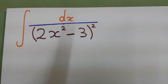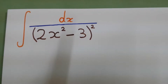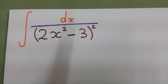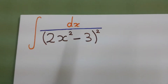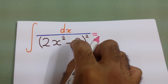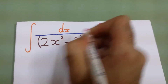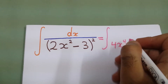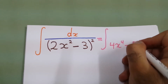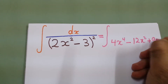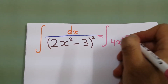Everybody, this question says to evaluate this integral but don't use trig substitution and don't use partial fractions. So first we will simplify it: the integral of the square root of 4x⁴ minus 12x² plus 9 dx.